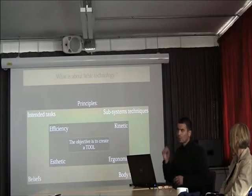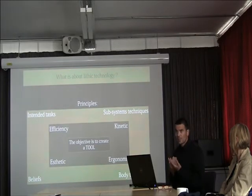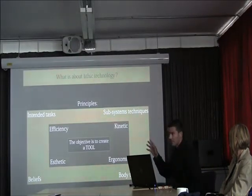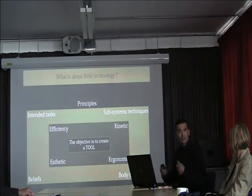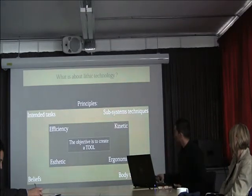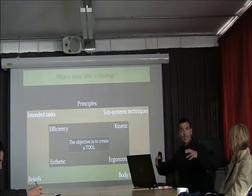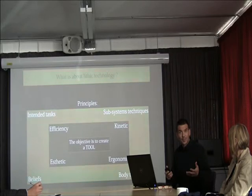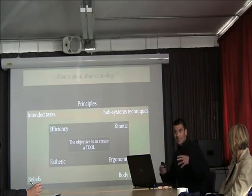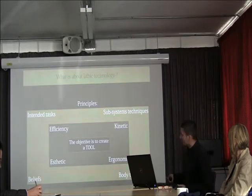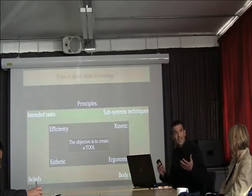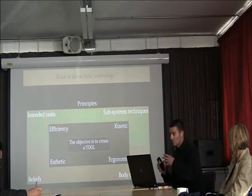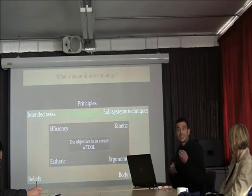To understand what dictates tool variability, you refer to four main notions. The first is efficiency: the tool has to be efficient in action, and efficiency is relative — it depends on the type of activity (cutting or scraping) and the type of material. The second is kinetics: when you use the tool, it's a matter of energy propagation, related to other technical subsystems like hafting. The third is ergonomy — the way you use the tool, which is related to the body techniques of the people. The fourth is a non-utilitarian aspect, which you might call aesthetic, related to the beliefs of these people.